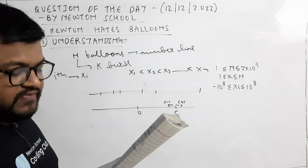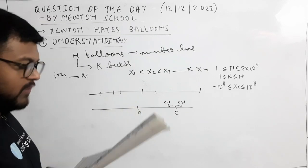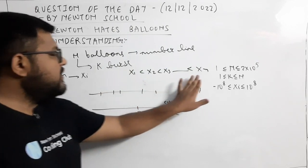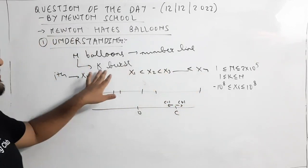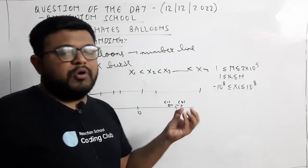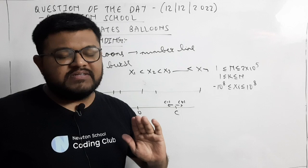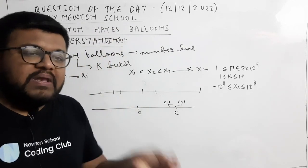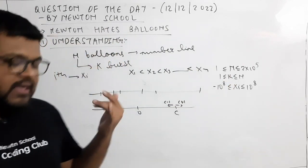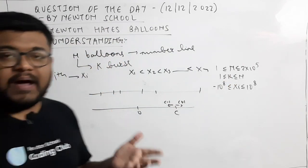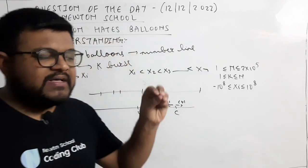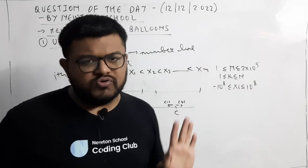Newton doesn't like to waste much of his time, so find the minimum time needed to burst K balloons. Total N balloons की coordinates दिये गए हैं, exactly K balloons हमें burst करने हैं, और starting में Newton 0 पे हैं। Balloon burst करने का time हमें नहीं दिया गया है, इसका मतलब हम assume कर सकते हैं कि वो negligible है — जैसे ही वो किसी coordinate पे पहुँचेगा जहाँ पे balloon है, तो वो उसे burst कर देगा।